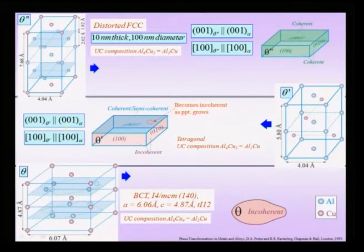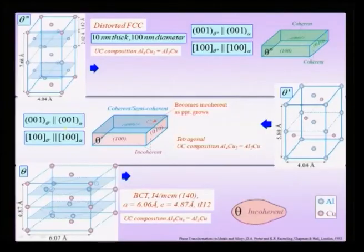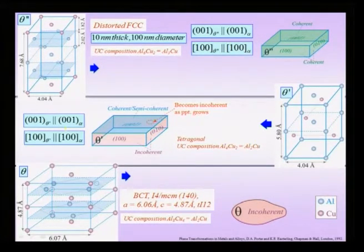Now, what is the crystallography and interface characteristics of these three precipitates? We will take that up before understanding why we get these metastable phases. One of the reasons is that even when the GP zone comes out, the orientation is chosen so that the disc's perpendicular is along the elastically softer direction of the aluminium matrix.